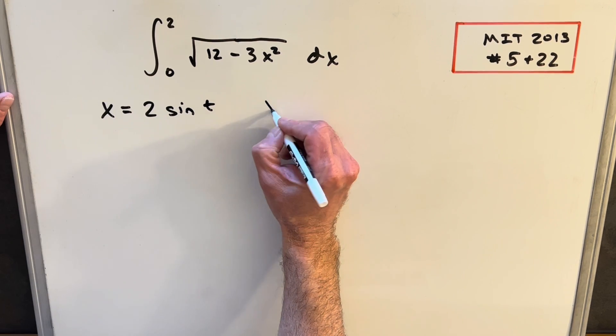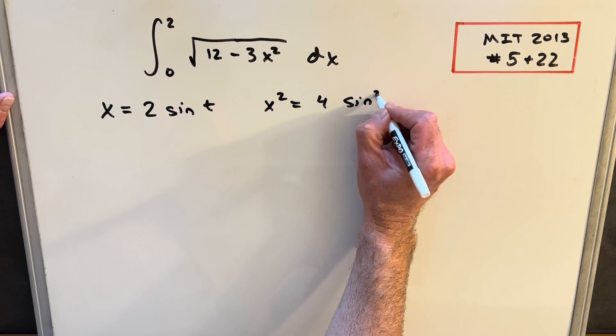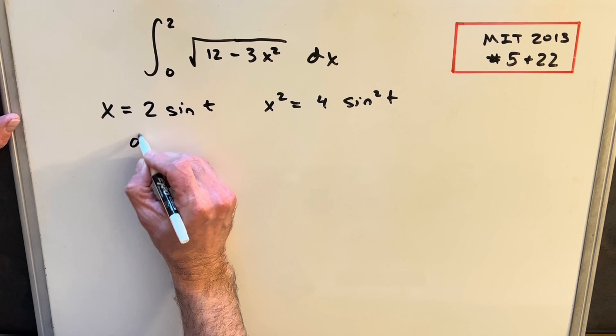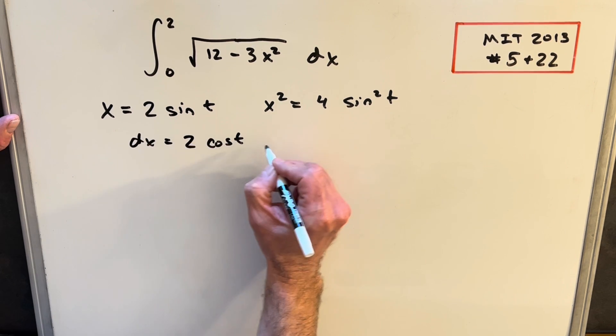And the reason why that works is because if we look at x squared, that's just going to be 4 sine squared t. And now let's find our dx value. So dx is going to be, the derivative of this is going to be 2 cosine of t dt.